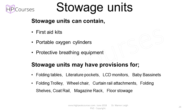Storage units can contain first aid kits, portable oxygen cylinders, protective breathing equipment, folding tables, literature pockets, LCD monitors, baby bassinets, folding trolleys, wheelchairs, curtain rail attachments, folding shelves, a coat rail, a magazine rack, or floor stowage. In the analysis we are going to do of the stowage unit, our stowage unit will contain a coat rail, magazine racks, and floor stowage.